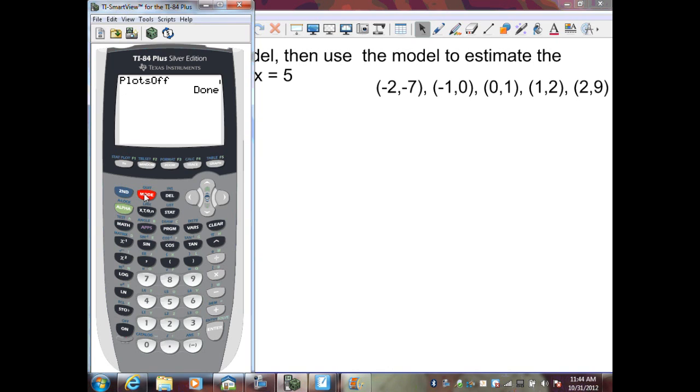So, let's go and plot our data. I need to hit stat. One is already highlighted, which is edit. I want to hit enter. And in list one, I want to put our x values. Negative two, and after each number, I want to hit enter, then negative one, zero, one, and two.